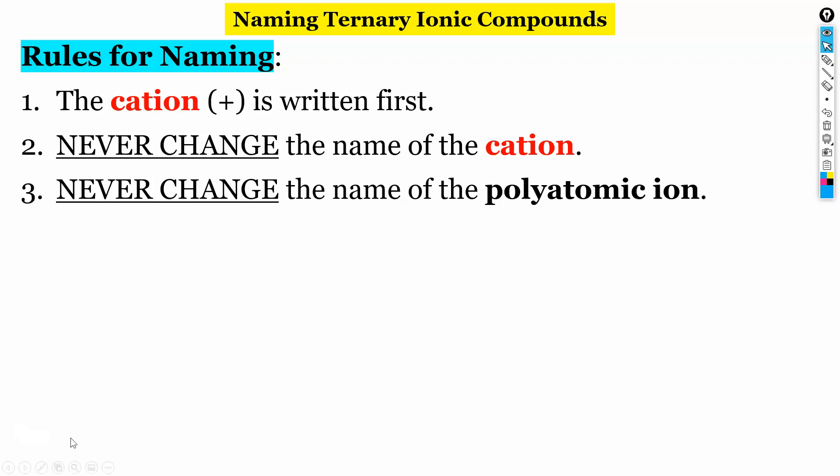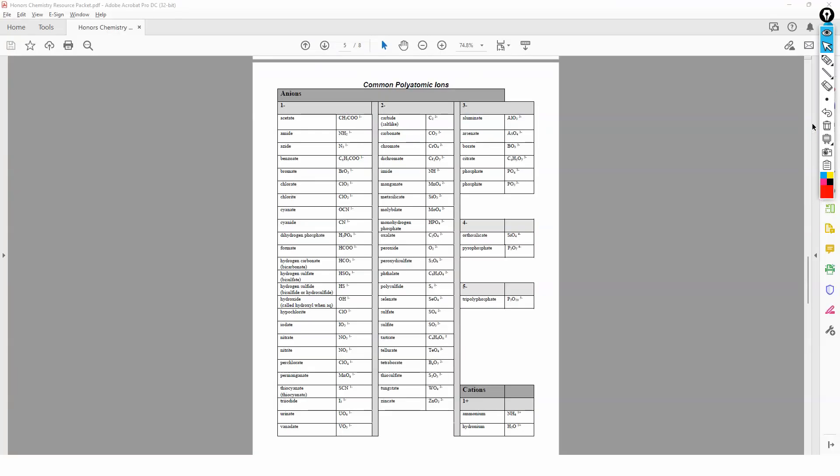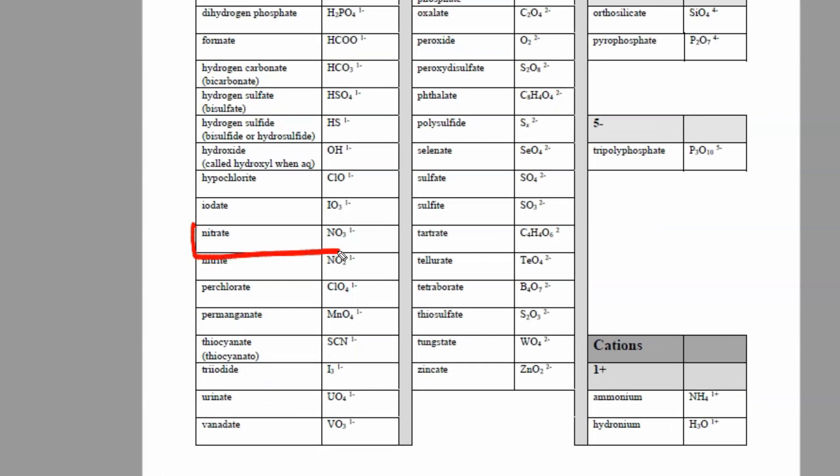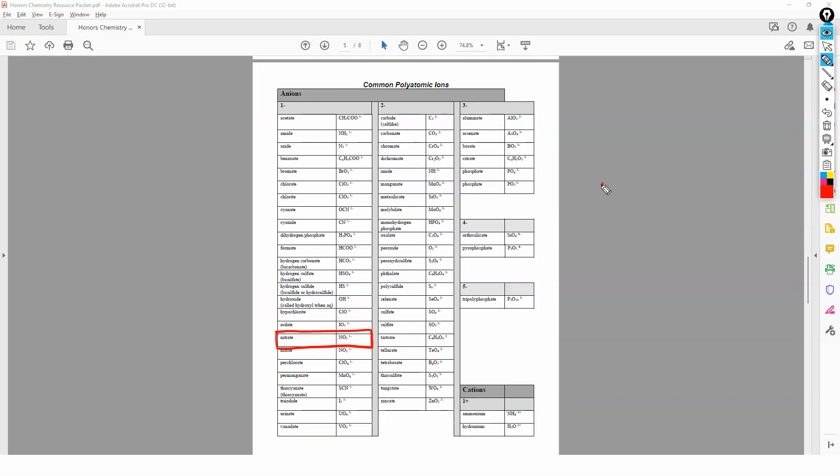So let's go ahead and take a look at some examples here. So we've got Na, which is sodium. And then NO3. I don't know what that is. Let's take a look at our table here. Okay. So NO3, you'd have to look on the table here. NO3 is nitrate, which is right here. So the hardest part about doing this is finding them on the table. So we had sodium. And then we had nitrate. That's it.